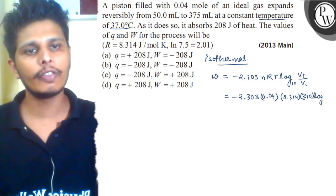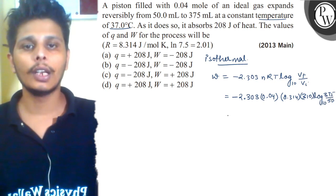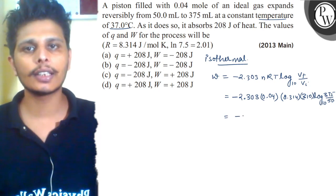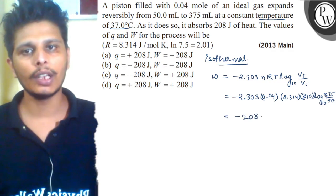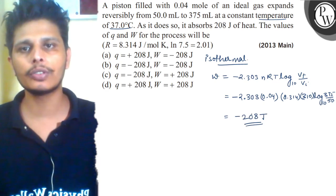310 Kelvin. And log with base n, final volume is 375 and initial volume is 50. Let's solve this, work done comes out to be minus 208 joule.